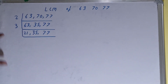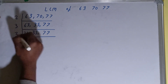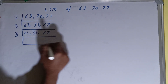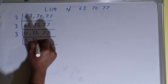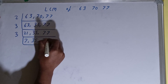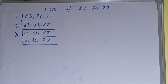Checking again, only the first number, 21, is divisible by 3, so we divide it and it becomes 7. The other numbers are not divisible, so we copy them down. Now none of the numbers are divisible by 3, so we move to the next lowest prime number, which is 5.